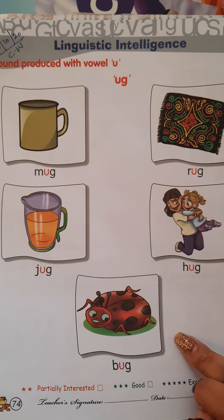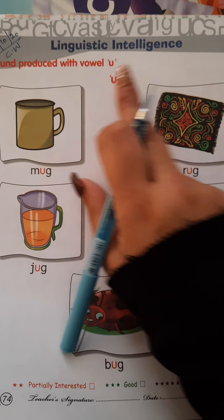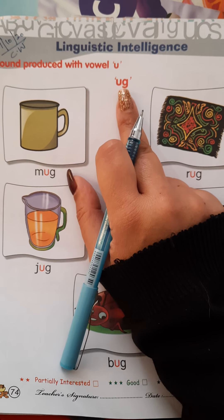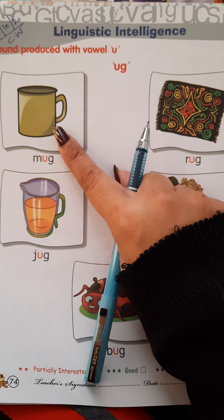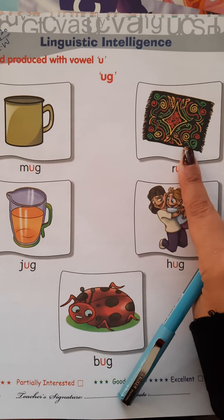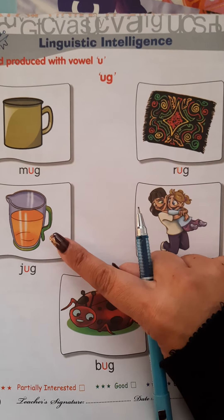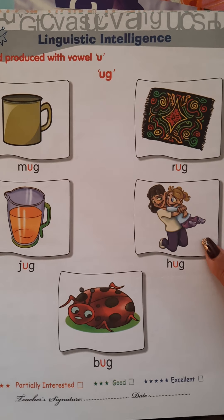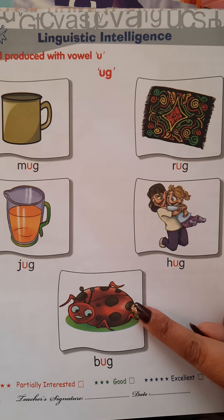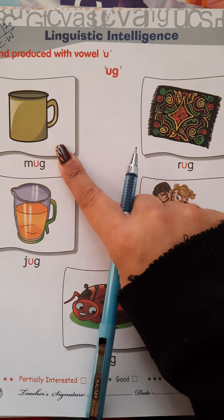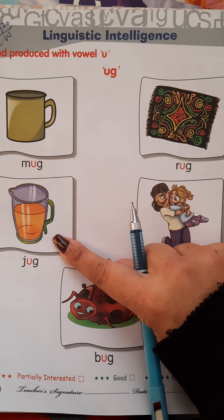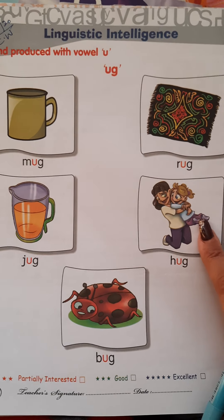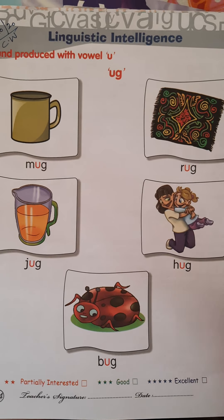Open it. Page number 74, UG sound words. Put your finger on your book. Mug, rug, jug, hug, bug. Mug, rug, jug, hug, bug.